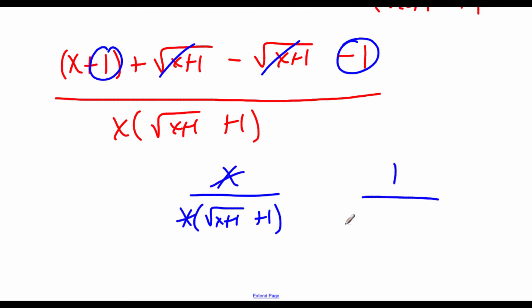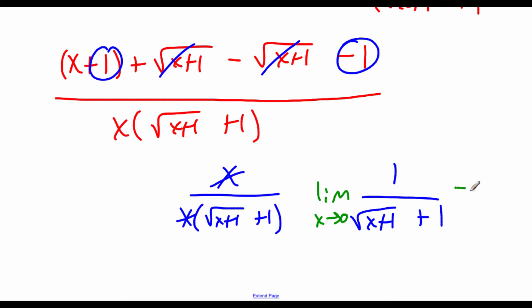Now we've got 1 over the square root of x plus 1 plus 1, and we take the limit as x approaches 0. Using direct substitution, we plug in 0: 1 over the square root of 0 plus 1 plus 1. The square root of 1 is 1, so we get 1 over 2, giving us one half as this limit.